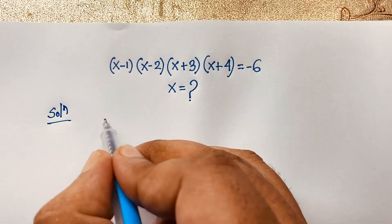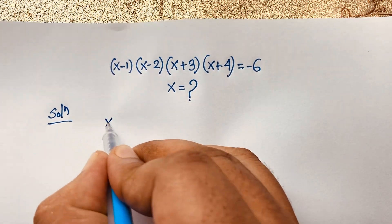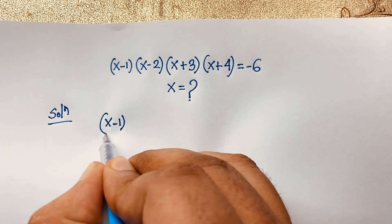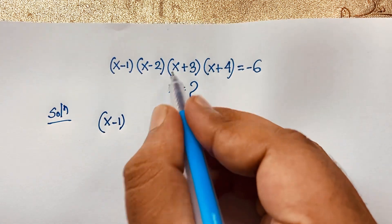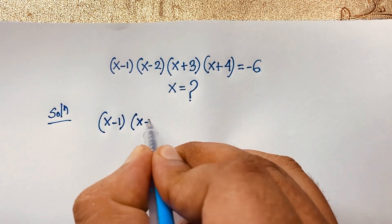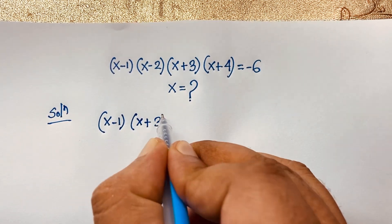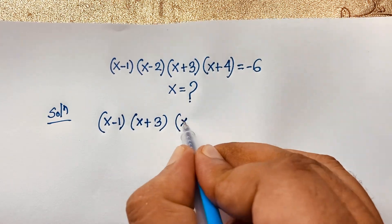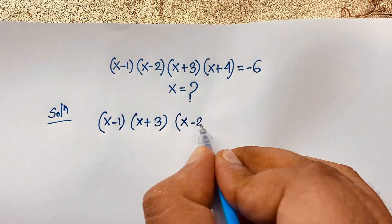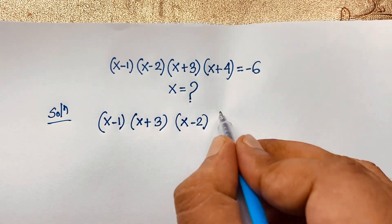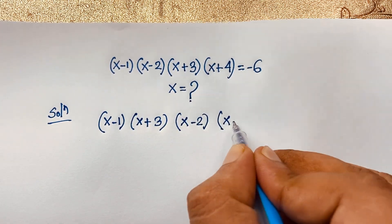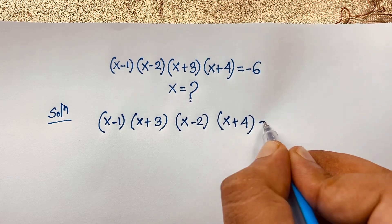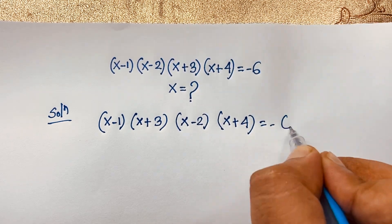Our approach: I take (x minus 1) and pair it with (x plus 3), then (x minus 2) paired with (x plus 4), all equal to negative 6.